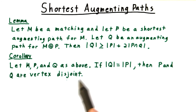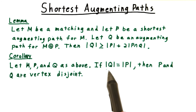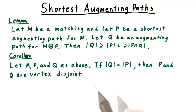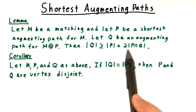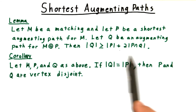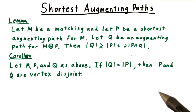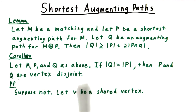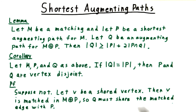A corollary of this lemma is that if p and q are the same size, then they have to be vertex disjoint. The fact that they are edge disjoint follows directly from this equation. To argue that they have to be vertex disjoint, we'll argue that sharing a vertex implies sharing an edge. So let's take this theorem and suppose not — we'll let v be a shared vertex.